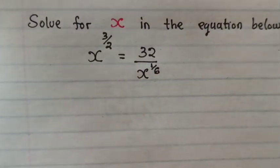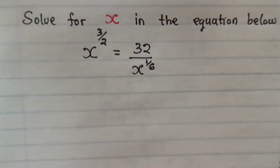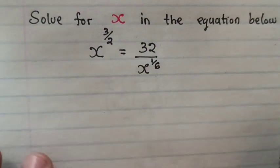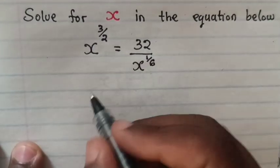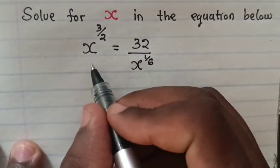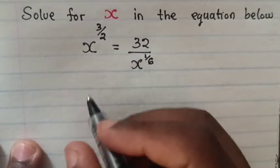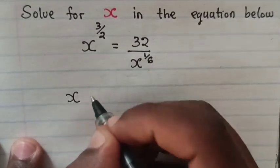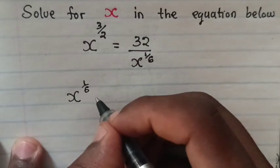Solve for x in the equation: x power of 3 over 2 is equals to 32 divided by x power of 1 over 6. Solution: we multiply by x power of 1 over 6 on both sides.